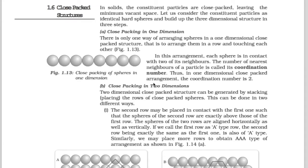Hello students, I hope you all are happy and healthy. Today we will study about closed packed structures. In solids, the constituent particles are closed packed leaving the minimum vacant space. We will consider the constituent particles as identical hard spheres and build up the three dimensional structure in three steps. The three-dimensional structure in a crystalline solid is known as crystal lattice.